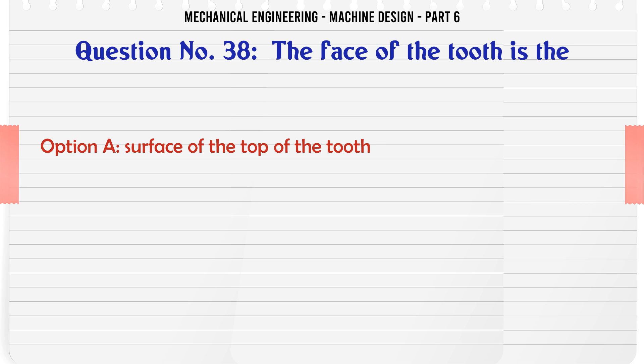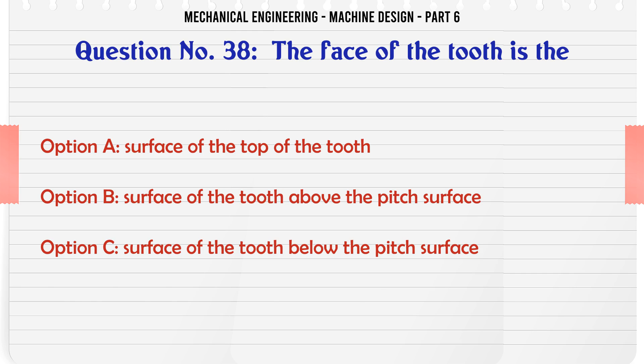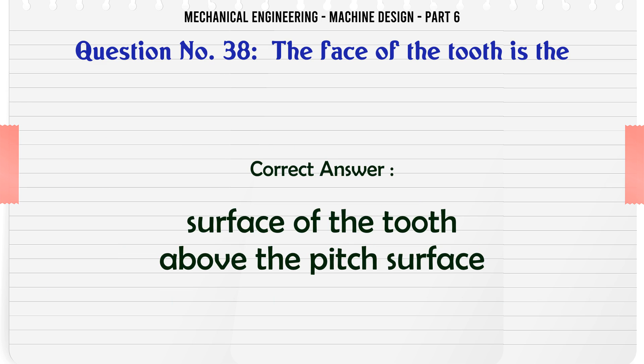The face of the tooth is the: A) surface of the top of the tooth, B) surface of the tooth above the pitch surface, C) surface of the tooth below the pitch surface, D) width of the tooth measured along the pitch circle. The correct answer is surface of the tooth above the pitch surface.